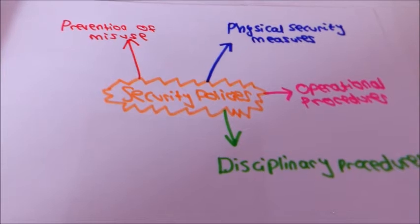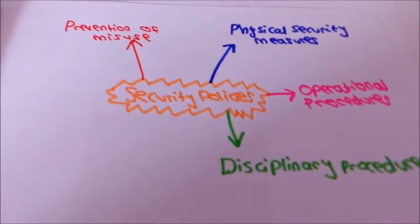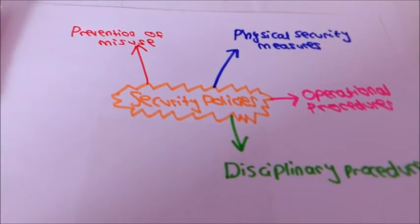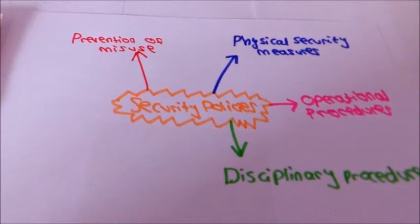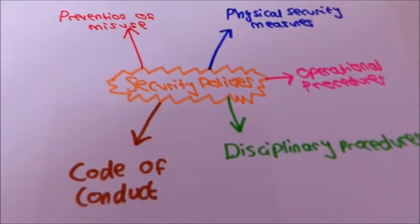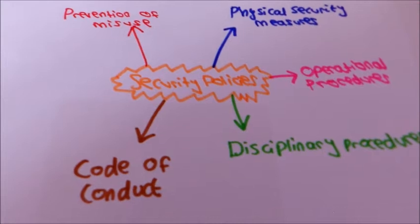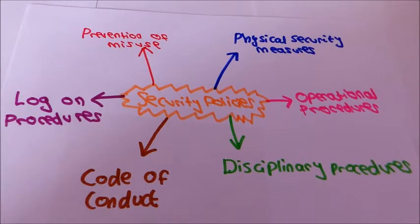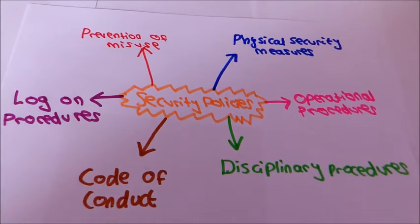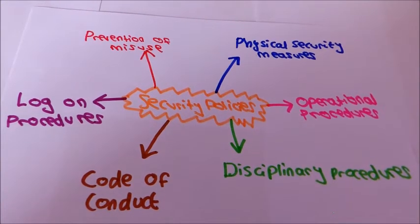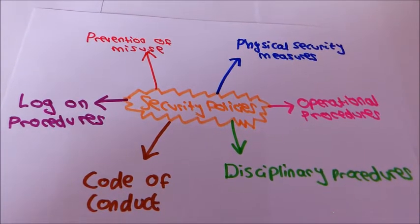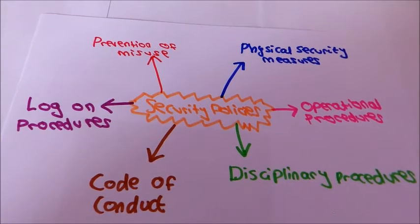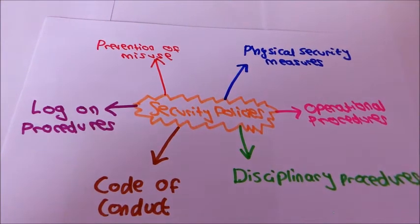The plenary procedures means that training needs to take place so that all staff are aware of the problems that misuses can cause and the consequences should they be caught such as verbal warning, written warning and then dismissal. Have a code of conduct to set out clearly what staff can and can't do using the ICT facilities. Log on procedures mean that users should use a mix of lower and uppercase letters in their password and change it regularly as well as don't write it down or share with other people. This will create access levels as certain areas should be secure with passwords that only the admin knows.